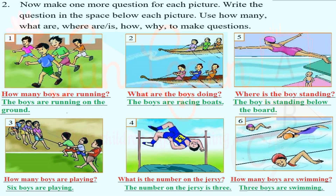What are the boys doing? The boys are racing boats. Where are the boys standing? The boys are standing below the boat. How many boys are playing? Six boys are playing. What is the number on the jersey? The number on the jersey is three. How many boys are swimming? Three boys are swimming.